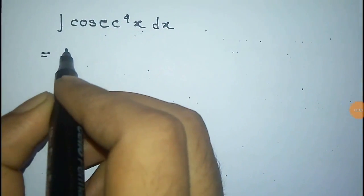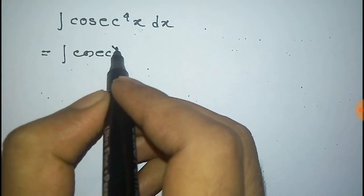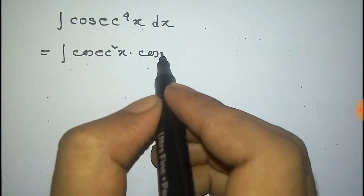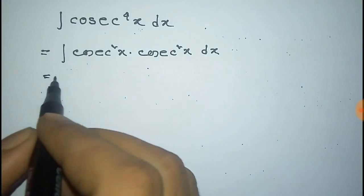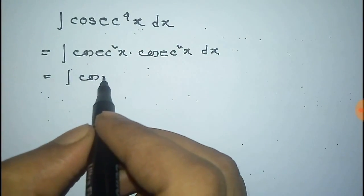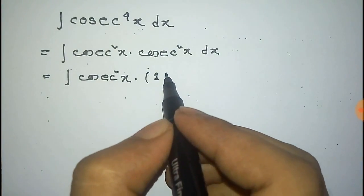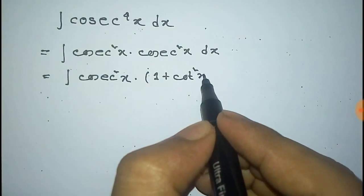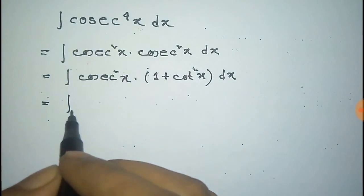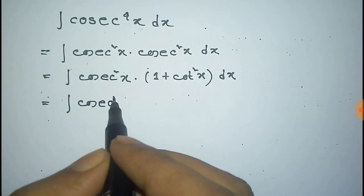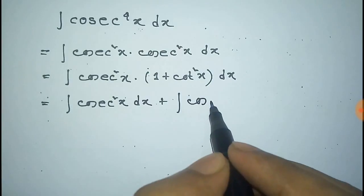We have to integrate cosec to the power 4x dx. We can write cosec⁴x as the product of cosec²x into cosec²x dx. Now this cosec²x can be written as 1 plus cot²x into dx. We multiply cosec²x with the bracket element and expand it.